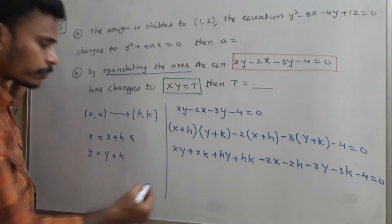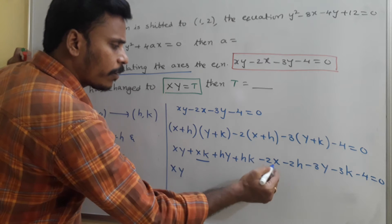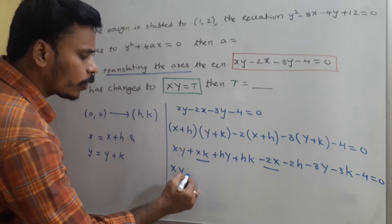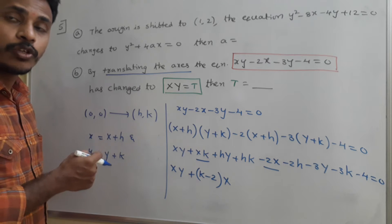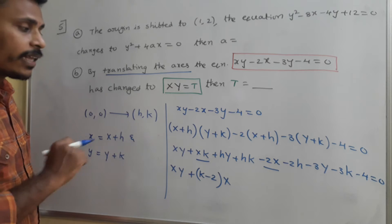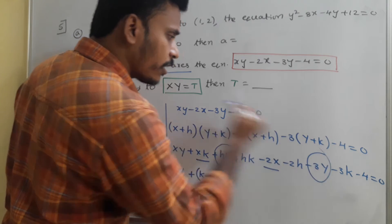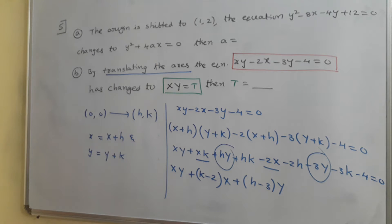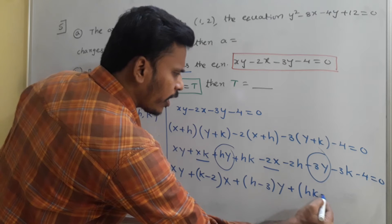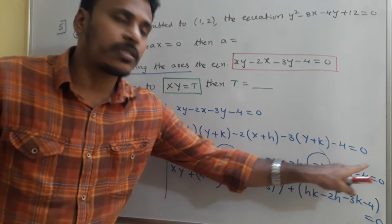Observe the terms. XY is one term. For the X terms: we have Xk and minus 2X, so we can write (k minus 2) times X. For the Y terms: we have hY and minus 3Y, so we can write (h minus 3) times Y. And all remaining terms are just constants: hk minus 2h minus 3k minus 4 equals 0.